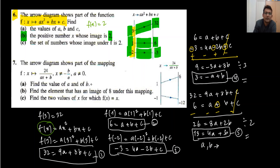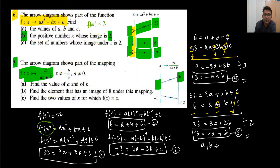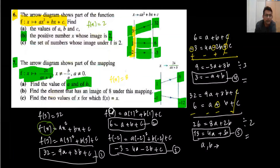Question number 7 is similar to question number 6. The equation is given — find the values of a and b using domain and range. The element that has image 8 under the mapping means we write f(x) = 8 and find the value of x — that's the domain. Similarly, find f(2) by putting x equals the value and getting the answer.